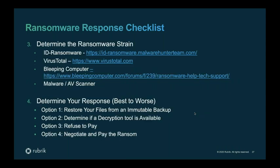There are resources to help you identify the type of ransomware that impacted you. ID Ransomware is one — you can upload samples of your ransom note and encrypted files, and it will identify the family and strain and give intelligence on whether a decryption key is available. VirusTotal, the open malware database, is another resource. And the Bleeping Computer forum is where the world's largest malware and antivirus hunters gather — a great place to look if you got hit with a new variant or zero-day attack.